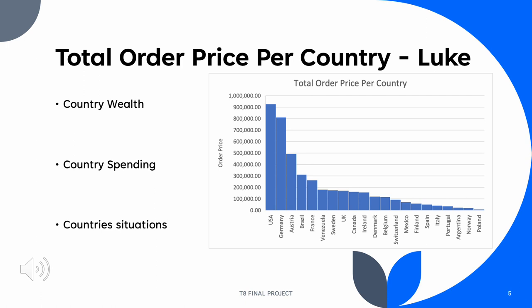My name is Luke Klingler and I'm going to be presenting the second visualization, which was the total order price per country. This specific subset was chosen because of how important total order price is for each country and how it relates to the problem at hand. This visualization illustrates how much each country was spending during this time span, and the product category could also be linked to illustrate what specifically each country is spending their money on. This chart helps illustrate what each country spent in the past few years and with more data could be a lot more specific.